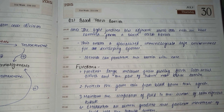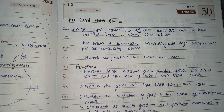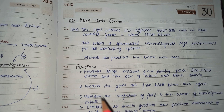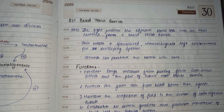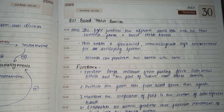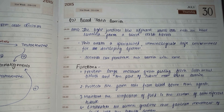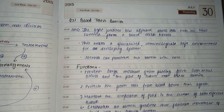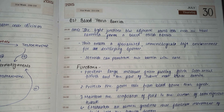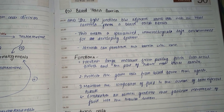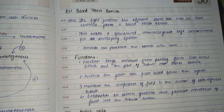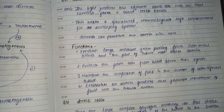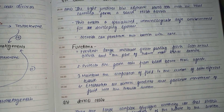The blood testis barrier prevents large molecules from passing from the interstitial tissues into the part of the tubule near the basal lamina. It also protects the germ cells from blood-borne toxic agents — certain toxic agents that circulate in the body — which might hamper the sperm cells and change the genetic constitution of their nucleus.